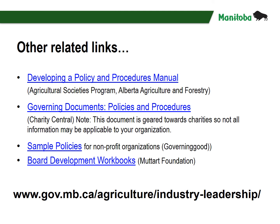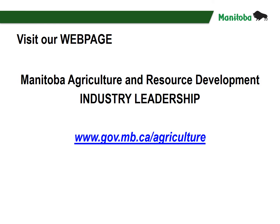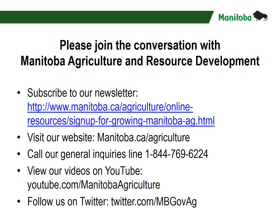Other links can be found on Manitoba's Industry Leadership page. You can direct any questions to leadership at gov.mb.ca. Make time to visit our Manitoba Agriculture and Resource Development Industry Leadership webpage at www.gov.mb.ca/agriculture. There you will find fact sheets, worksheets, templates, and guidebooks to help you strengthen your organization, as well as contact information for rural leadership specialists available to work with your ag organization. The website contains information related to starting an organization, leading an organization, developing a strategic plan, being a board member, board operations, dissolving an organization, and much more. Please join the conversation by subscribing to our newsletter, visiting our website, calling our general inquiries line, viewing our videos on YouTube, or following us on Twitter.